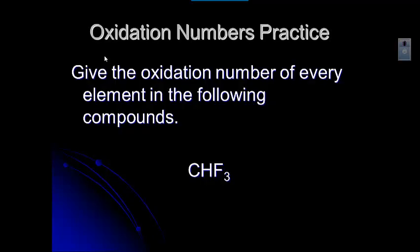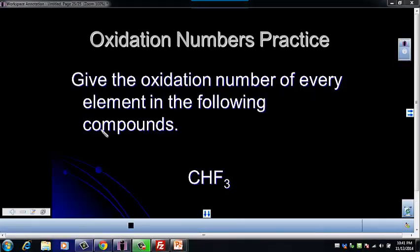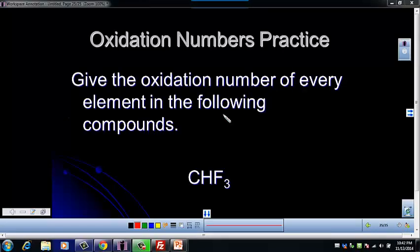So let's go through a few examples. This is a typical problem: give the oxidation number of every element in the compound. Looking at this example, let's look at the elements in this compound that we know from our rules. We don't really know anything about carbon yet.